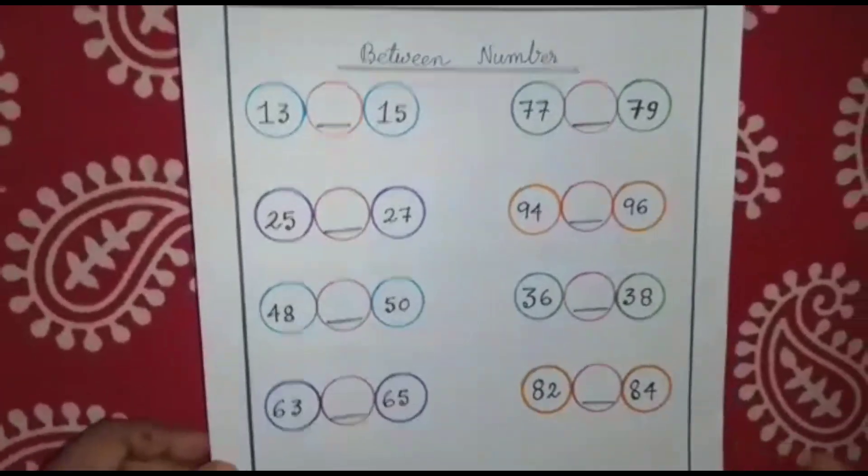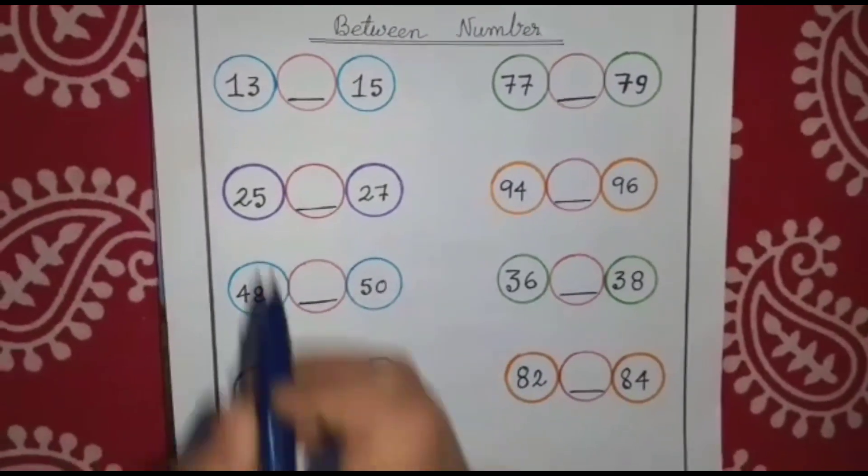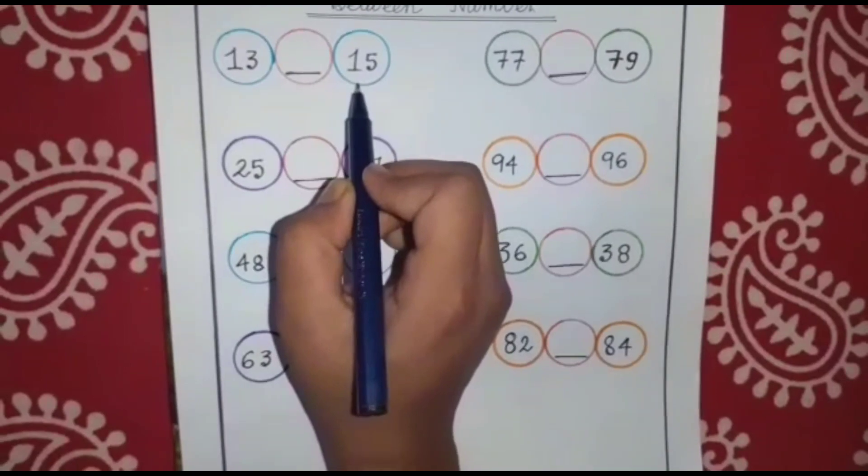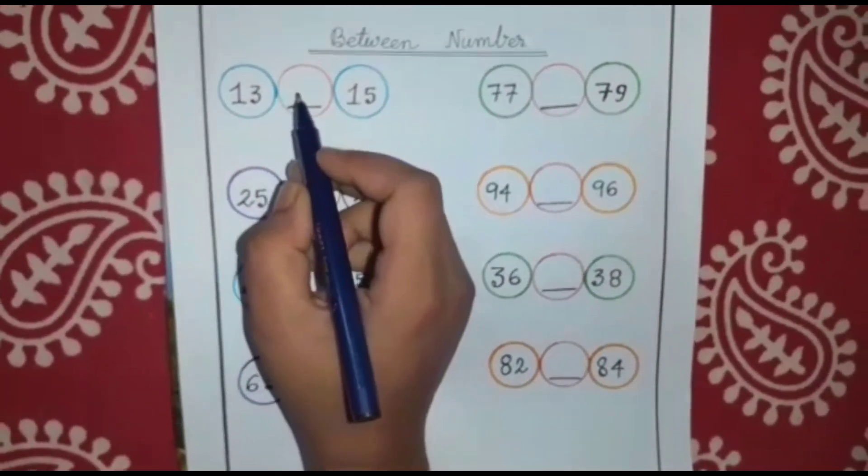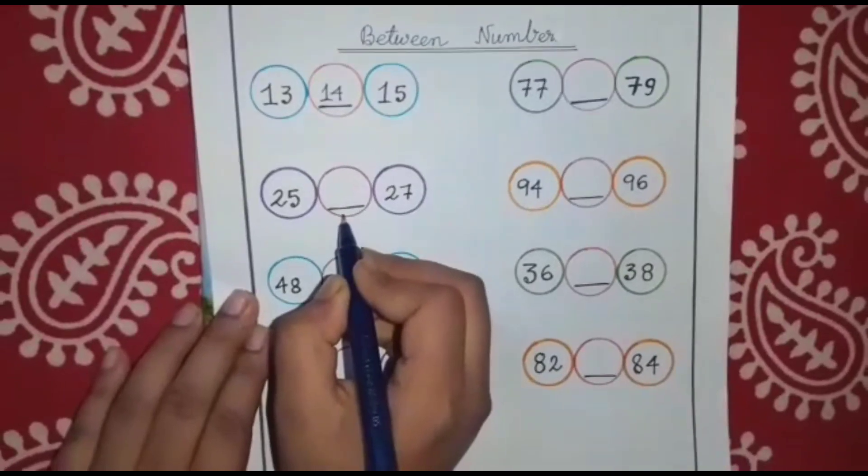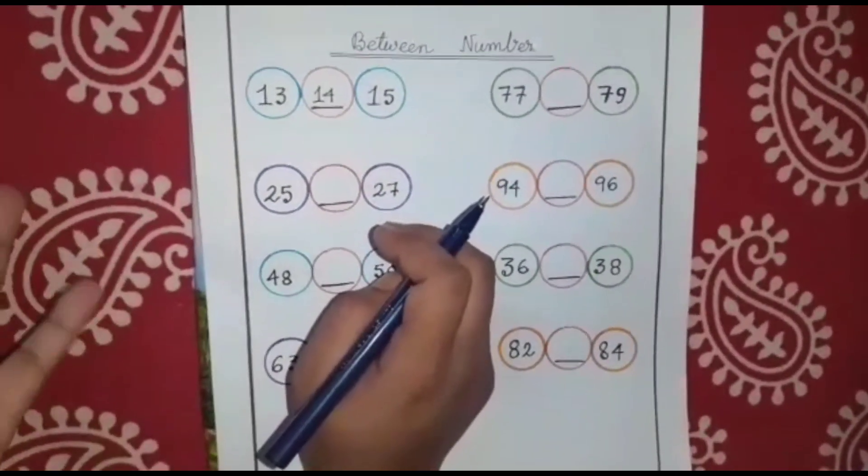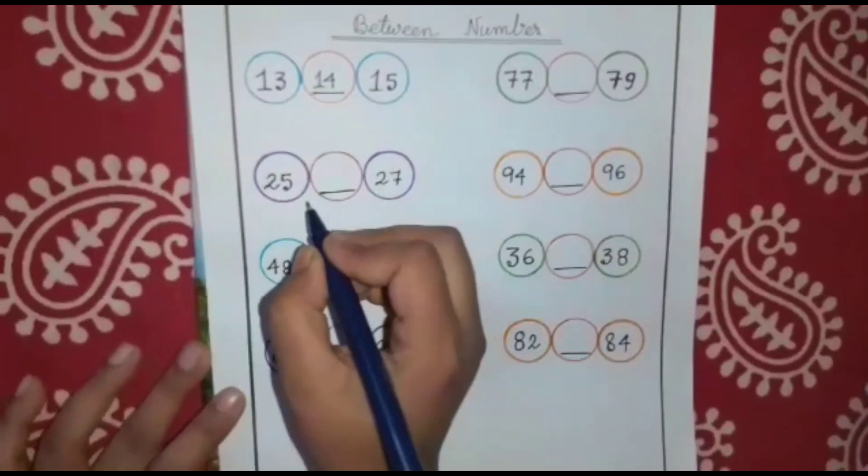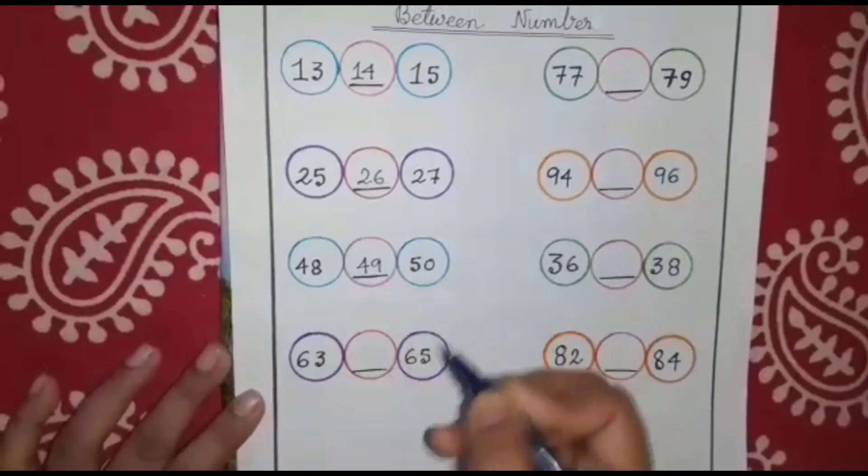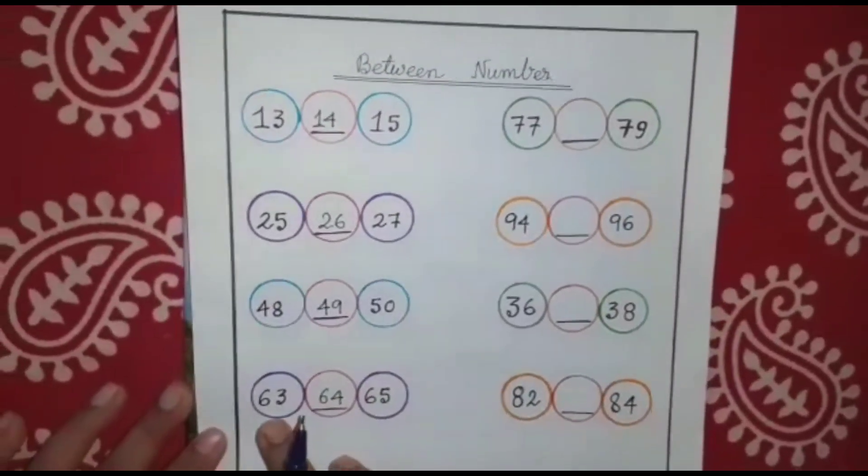Next, there is between number. There is between number. See, there is 13 dash 15. 13 dash 15. Let's do the forward counting. After 13, there is 14. So, you will write here 14. After 25 and before 27. You can do whatever way you want to follow. You can always do it by forward counting or by backward counting. If you do by forward counting, after 25, there is 26. After 48, there is 49. After 63, 64. So, this 64 comes between 63 and 65.